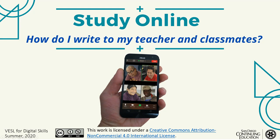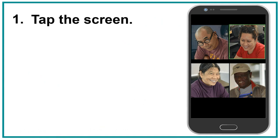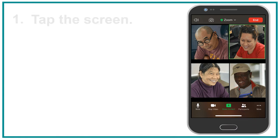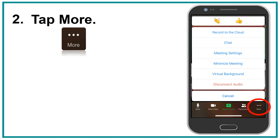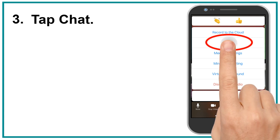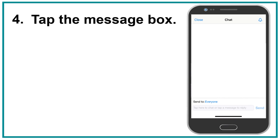Study online: how do I write to my teacher and classmates? Chat with Zoom on your phone. One, tap the screen. Two, tap more. Three, tap chat. Four, tap the message box.